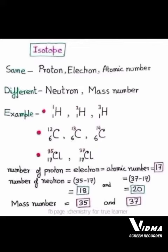The atomic number is 17. The mass number is 35 in chlorine-35 and 37 in chlorine-37. If we subtract the atomic number from the mass number, we will get the number of neutrons.